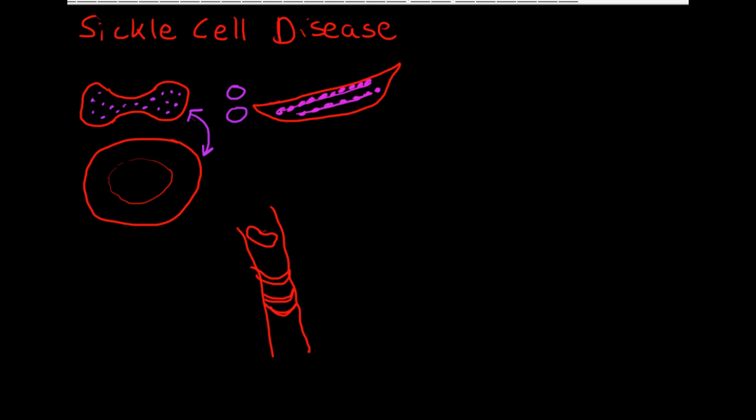Someone with sickle cell disease will have recurrent episodes of vasoocclusive crises throughout their lives, often occurring a half dozen to a dozen times per year and lasting for several weeks. Because these block blood flow, we end up with areas of ischemia and infarction that cause severe pain and can lead to organ damage. It can affect any part of the body.